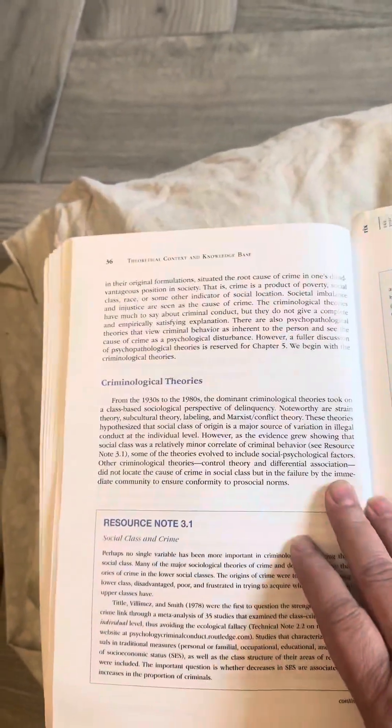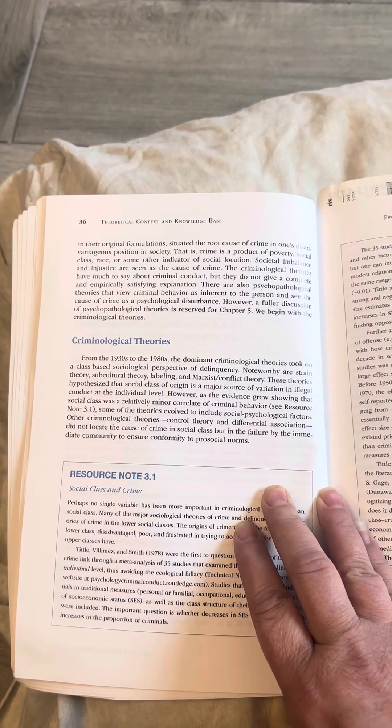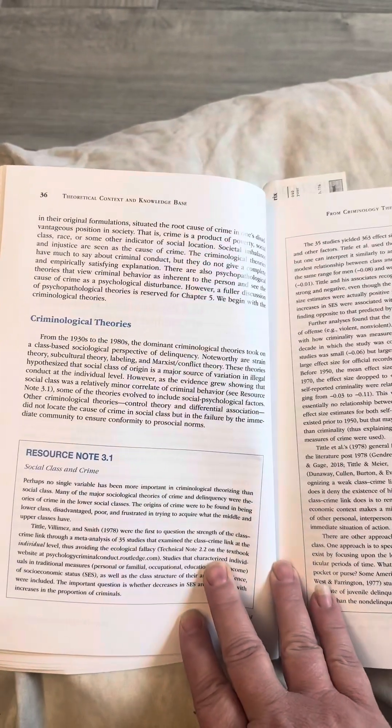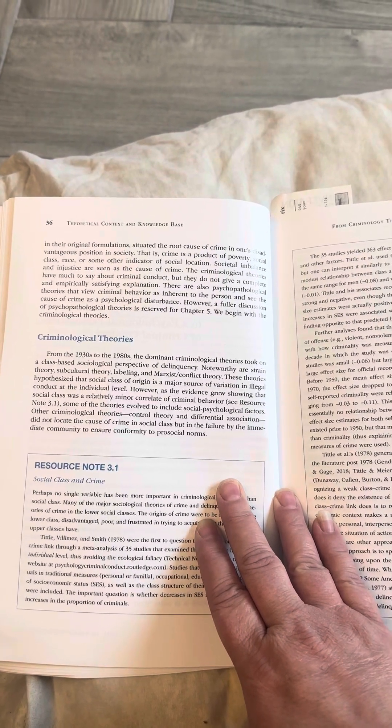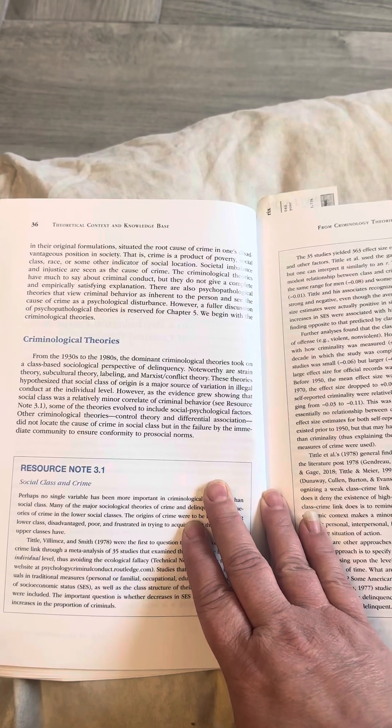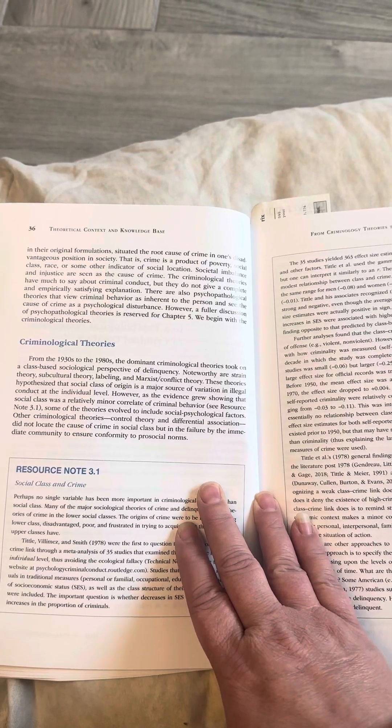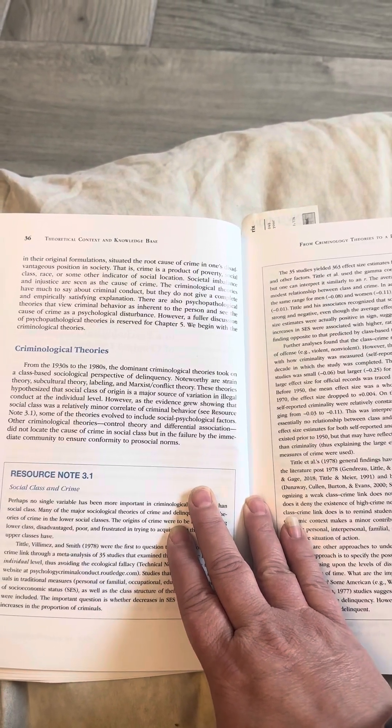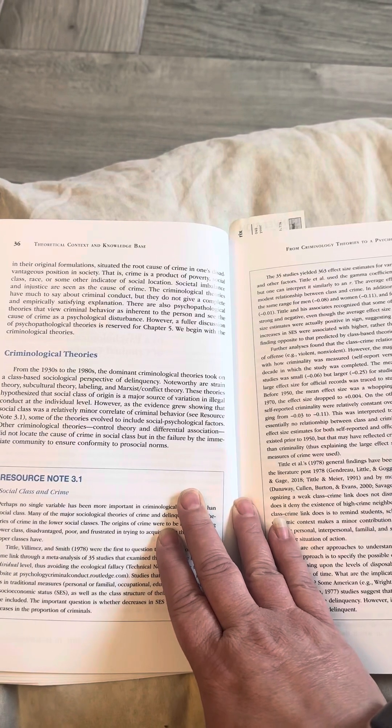Many of the criminological perspectives in their original formulations situated the root cause of crime in one disadvantaged position in society. That is a product of poverty, social class, race, or some other indicator of social location. Societal imbalance and injustice are seen as the cause of crime. The criminological theories have much to say about criminal conduct, but they do not give a complete and empirically satisfying explanation. There are also psychopathological theories that view criminal behavior as inherent to the person and see the cause of crime as a psychological disturbance. However, a fuller discussion of psychological theories is reserved for Chapter 5. We begin with the criminological theories.